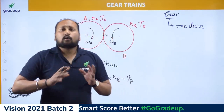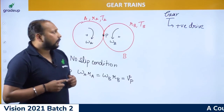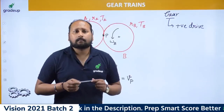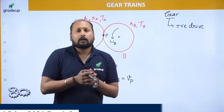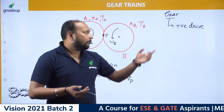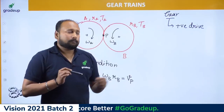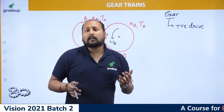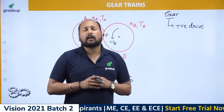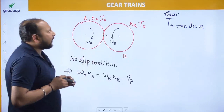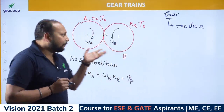Gears are considered a positive drive where there is no slip. An example of a negative drive is a belt and pulley system, where slip conditions exist. We prefer belt and pulley in some cases because gear drives are more costly, though they are less efficient due to slip losses.